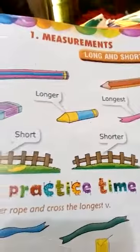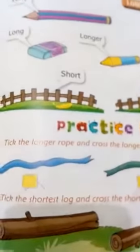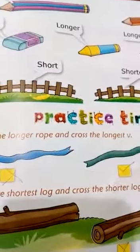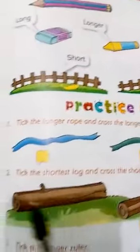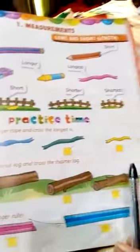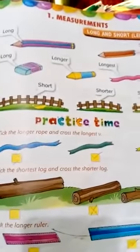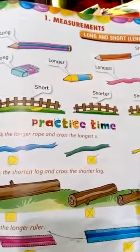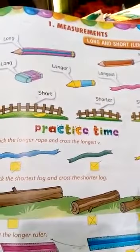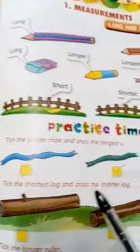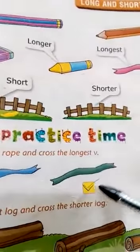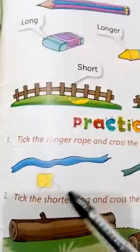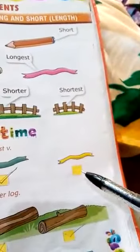Let's practice. Tick the longer rope and cross the longest rope. This object is long, longer, longer, long.